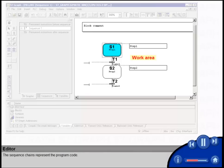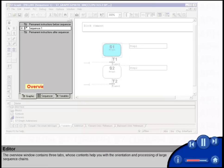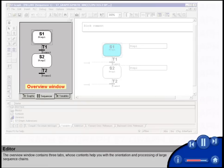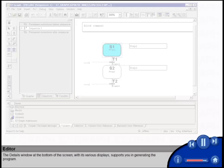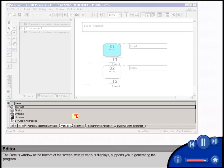The sequence chains represent the program code. The overview window contains three tabs whose contents help you with the orientation and processing of large sequence chains. The details window at the bottom of the screen, with its various displays, supports you in generating the program.